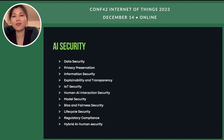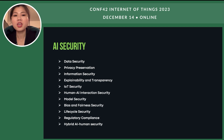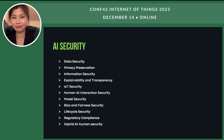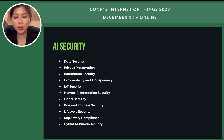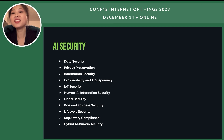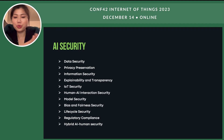We must also ensure our IoT devices — firmware and hardware — are secure. As we all know, apps and software have bugs. We definitely need to make sure our IoT products have regular updates to fix potential vulnerability bugs. Whether we are in the IoT industry or any other industry, everyone needs to prioritize AI security. For the IoT part specifically, we need to ensure regular updates, and between the AI and IoT systems, both cybersecurity and data security must be maintained.